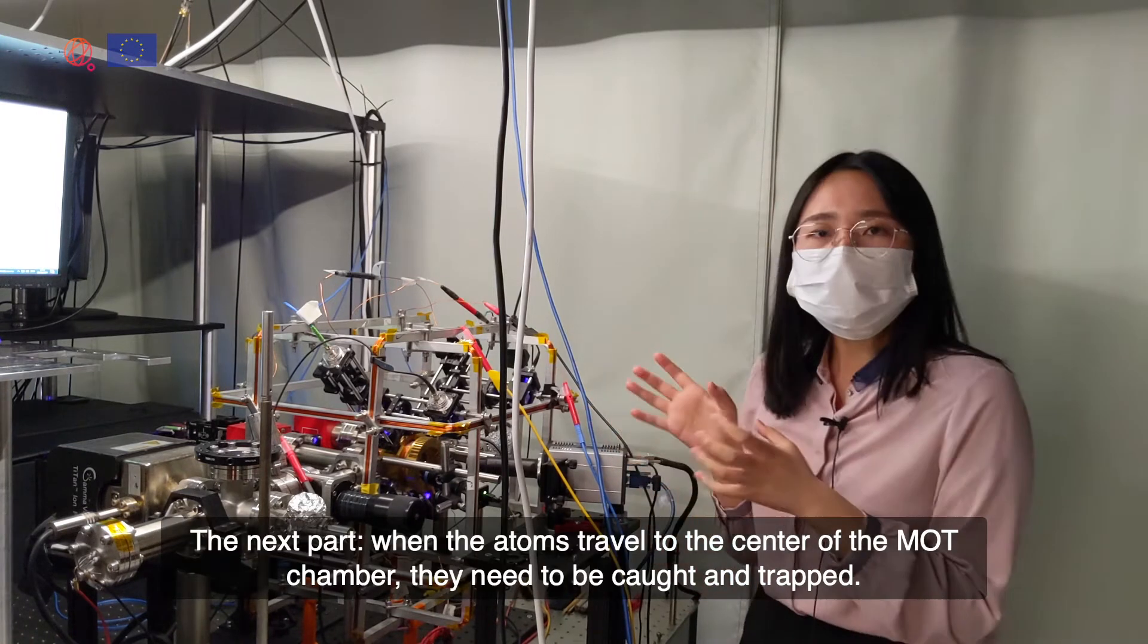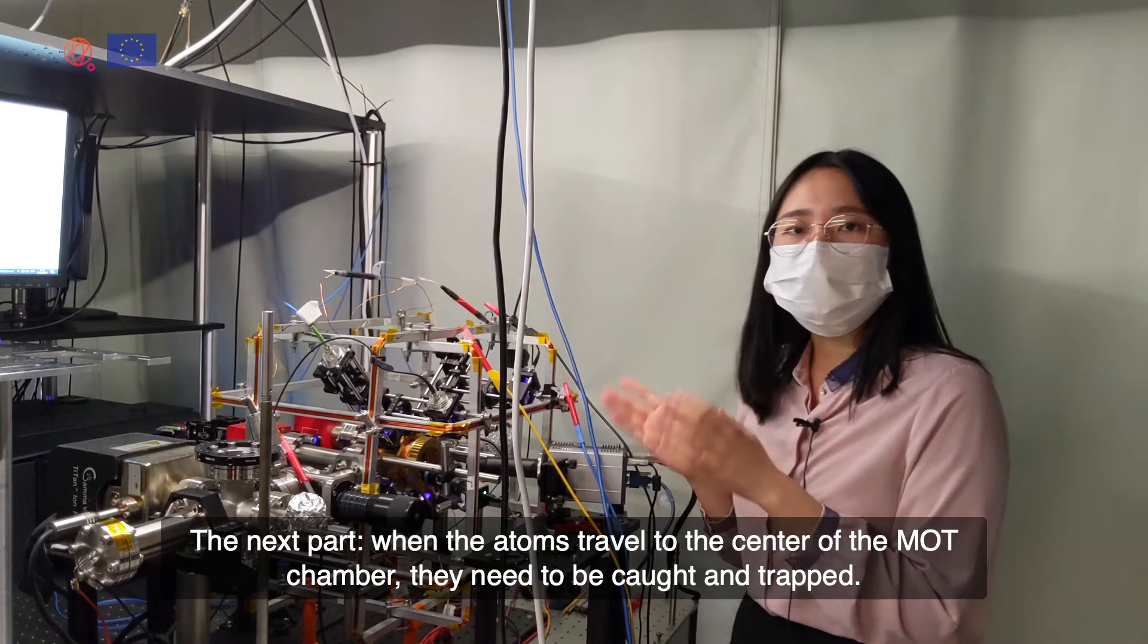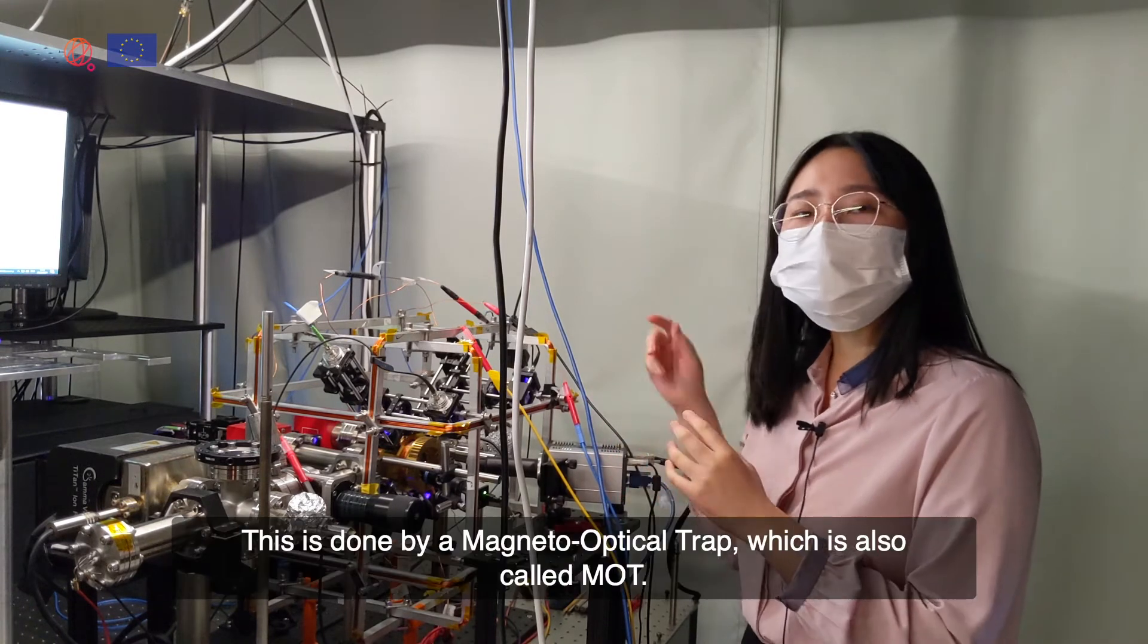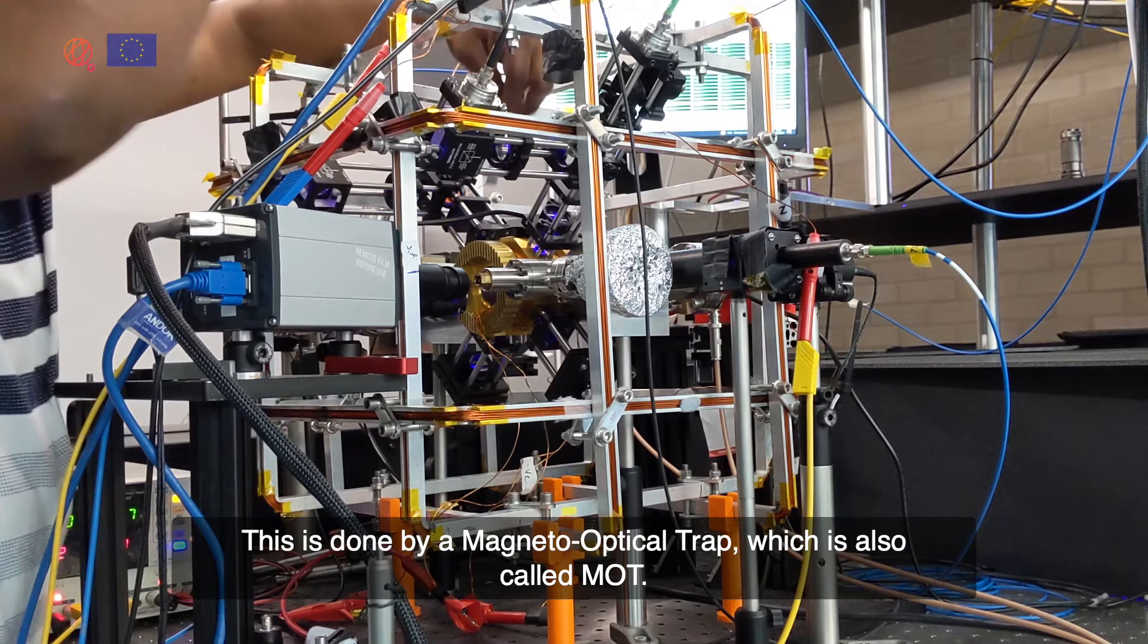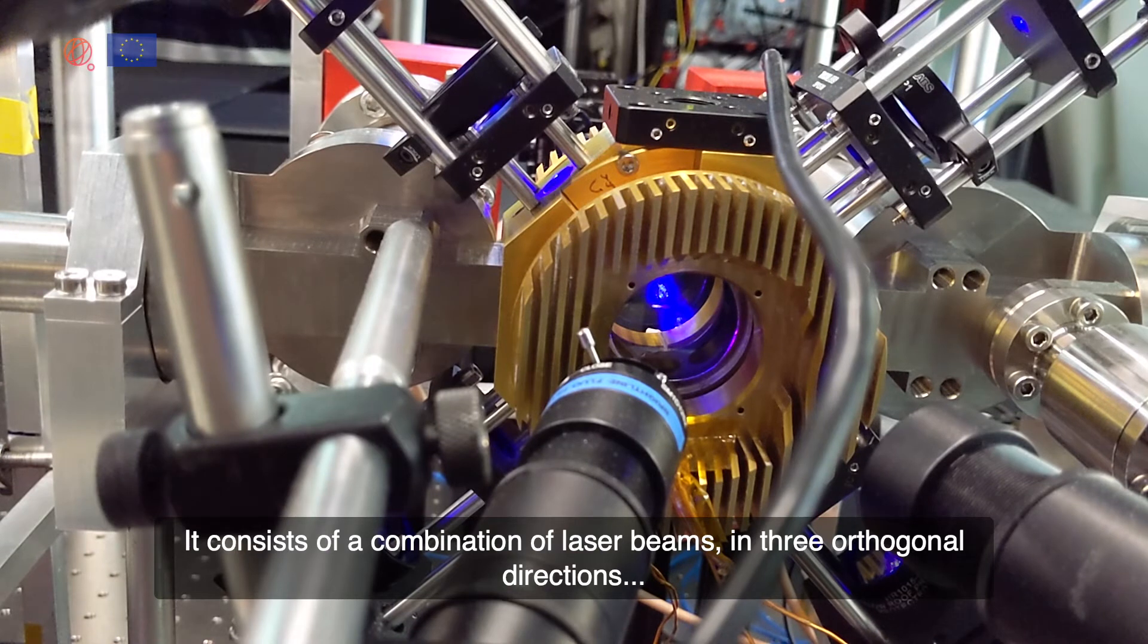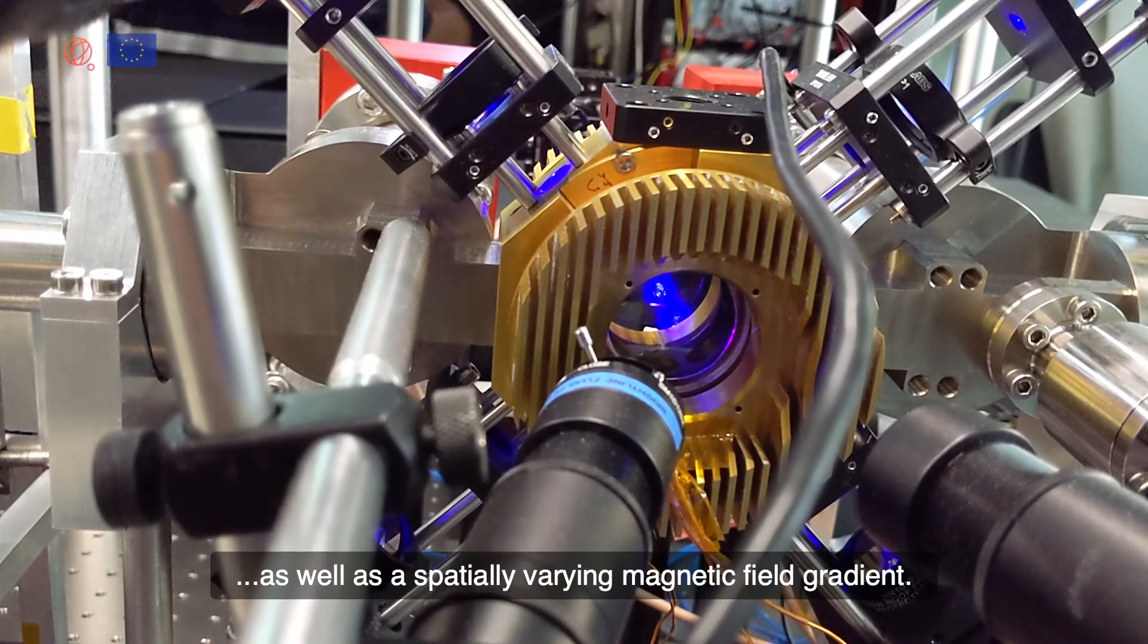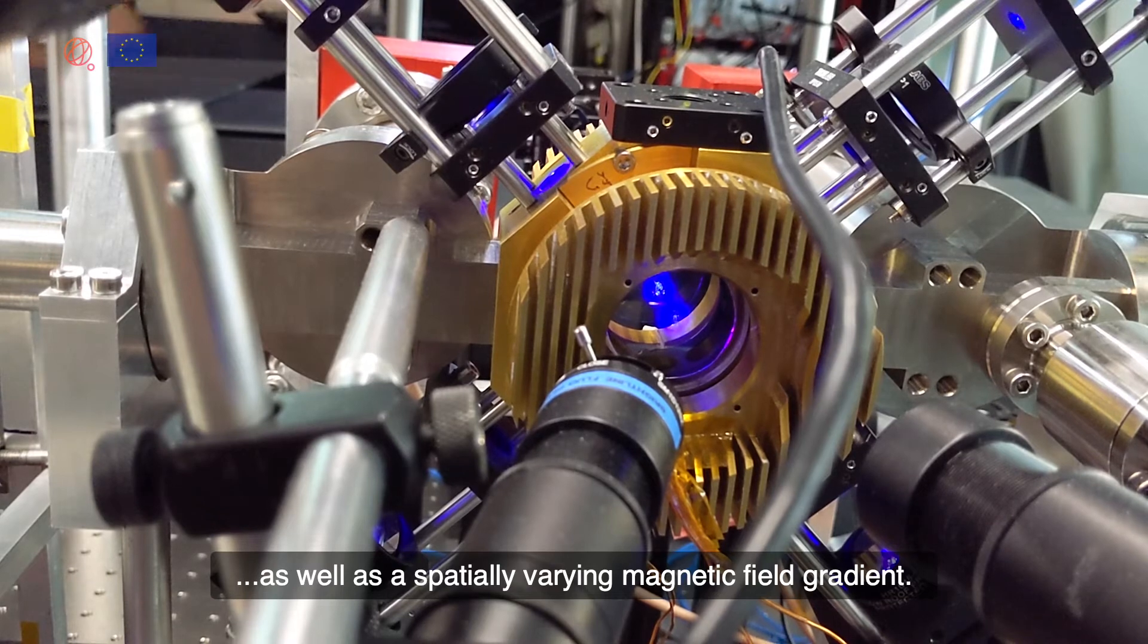In the next part, when the atoms travel to the centre of the MOT chamber, they need to be cooled and trapped. This is done by magneto-optical trap, which is also called MOT. It consists of a combination of laser beams in three orthogonal directions as well as a spatially varying magnetic field gradient.